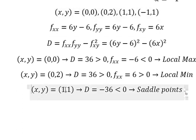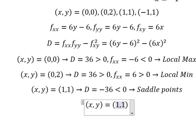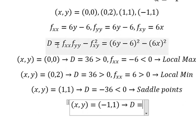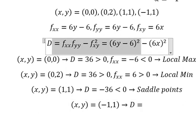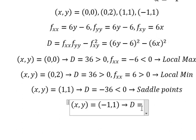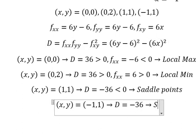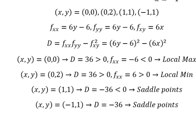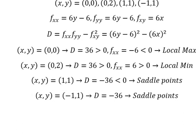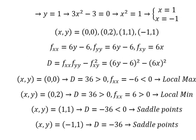And the last point, (-1, 1). We put number 1 in here and we get negative 36 — this is also a saddle point. This is the end. Thank you for watching. Here is the full answer of the question.